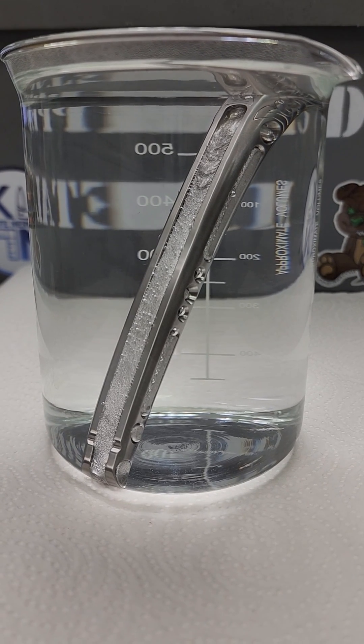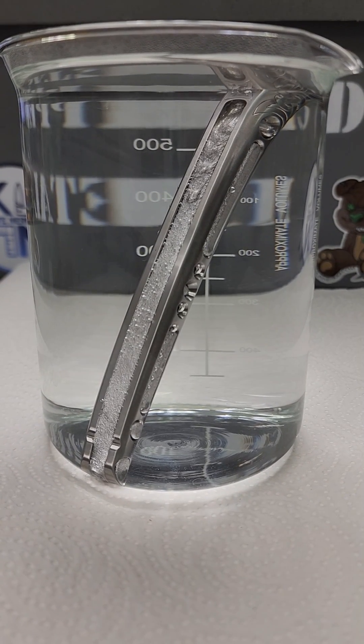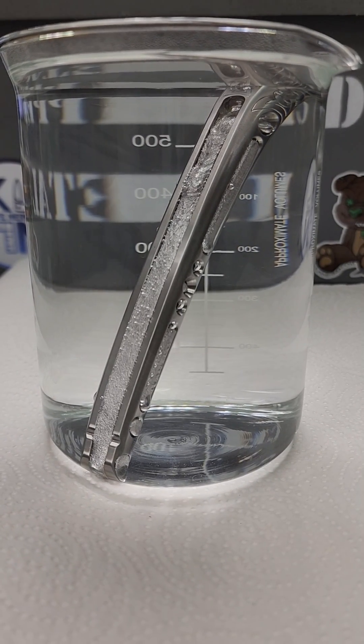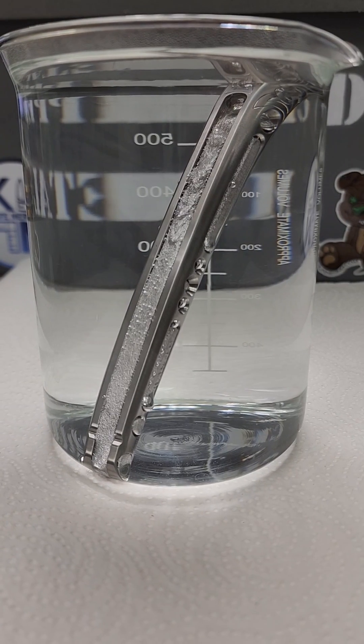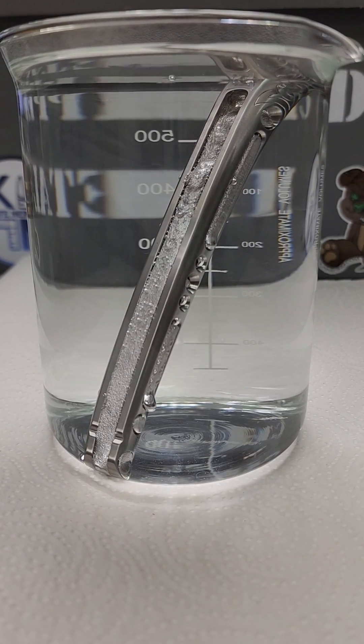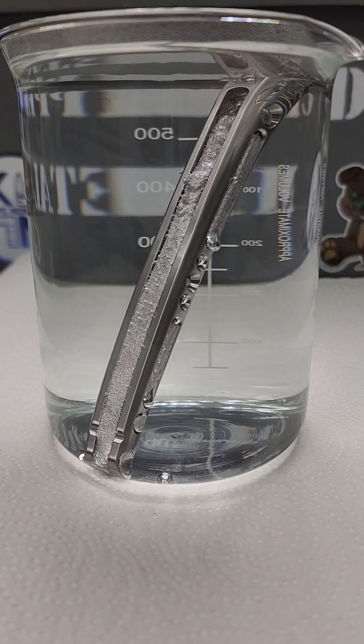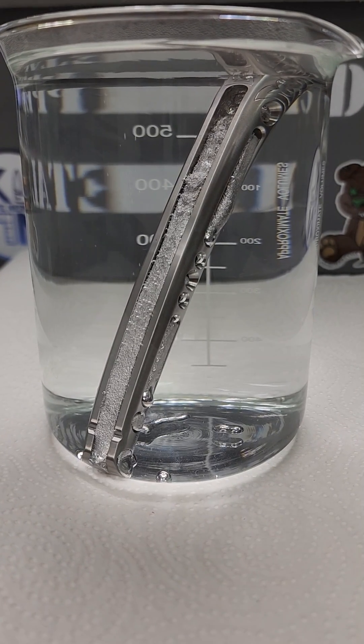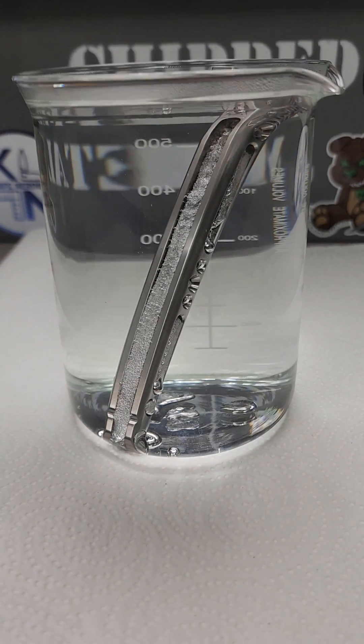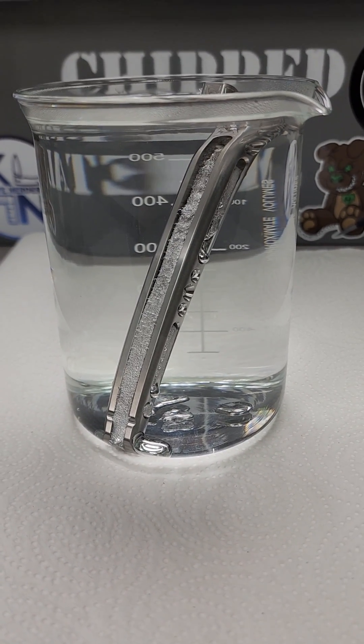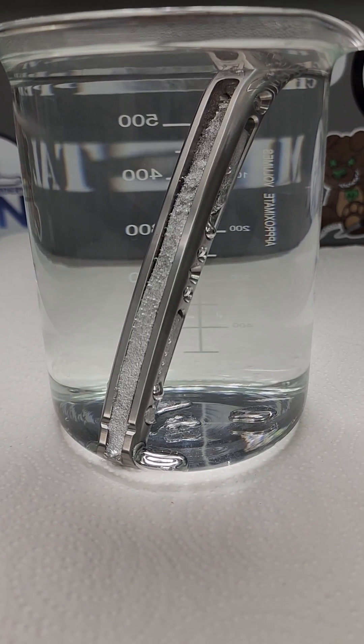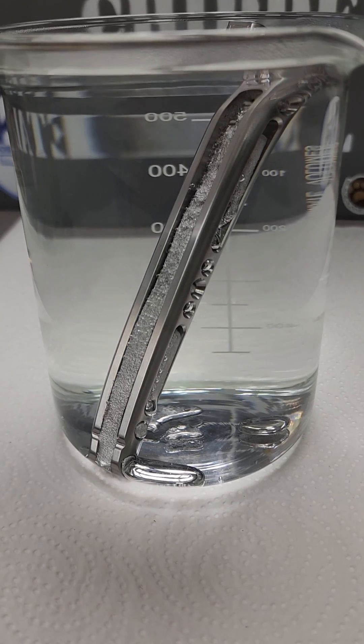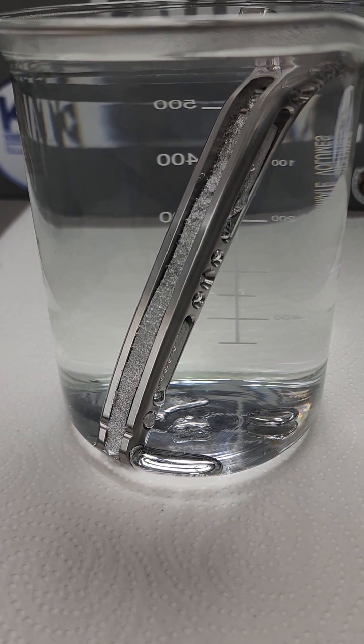The melting point on this stuff is 170 to 200 degrees somewhere in there. The boiling point of water is 212, and so you can just dunk your part in real hot water and all of that alloy that you use to reinforce it just melts out. That is so cool. You can see it pulling out the bottom there at the pivot.